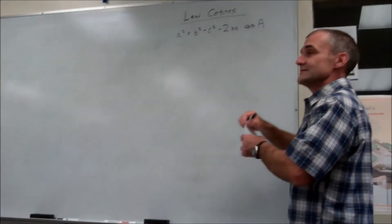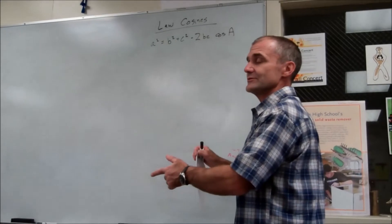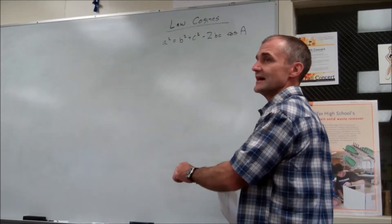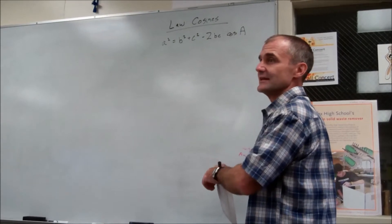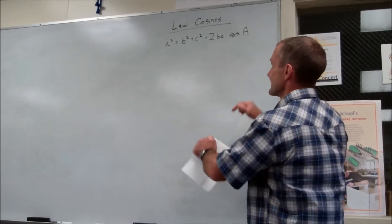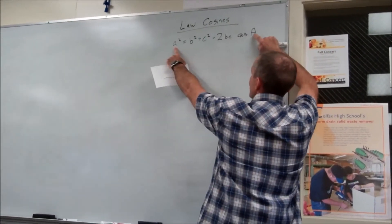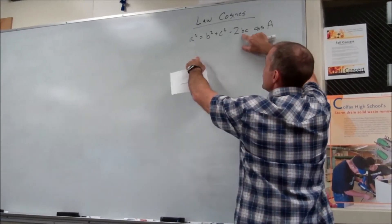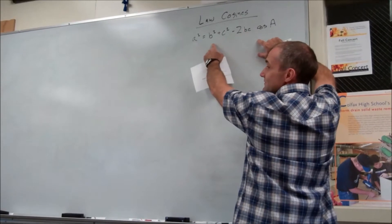The thing to remember, and this is why I really said it was very important to make sure that lowercase letter is always length of a side opposite a given angle, and that angle is a capital letter. So this a squared has to correspond to angle a. This is the side opposite angle a. These two sides are the same as these two sides.